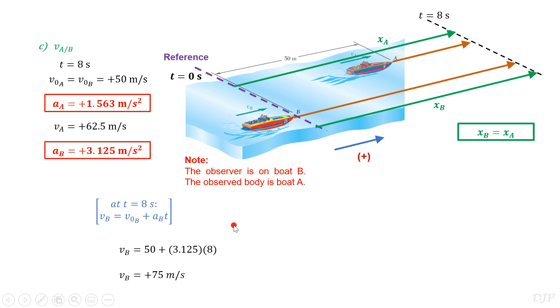Finally, we can now apply the formula for relative velocity. Always notice the subscript pattern that was explained a while ago to easily recall this formula. We now substitute their final velocities while making sure that we also carry their signs. This gives us a final answer of negative 12.5 meters per second. The negative sign indicates that if you are riding boat B, you might perceive boat A to be moving towards you with this magnitude.